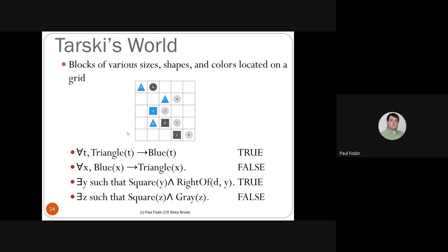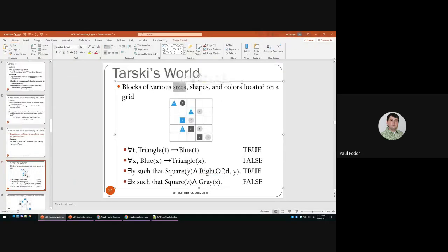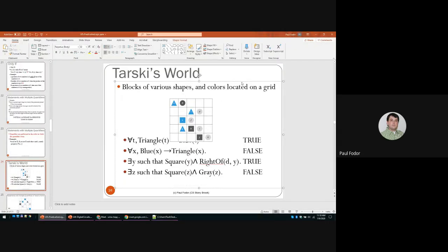We'll see these examples using Tarski's World, named after Alfred Tarski, a professor at UCLA originally from Poland, who wrote research papers and a textbook on quantified logic and trained many logicians worldwide. Tarski's World consists of blocks of different shapes and colors located on a grid — we have triangle A, circle B, square E, and so on.